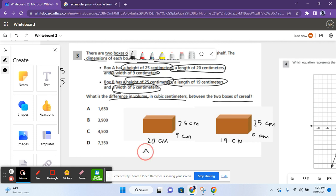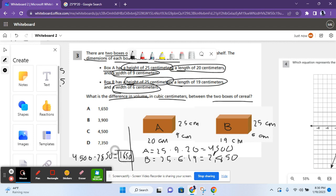So for prism A, you have 25 times 9 times 20. And for B, you have 25 times 6 times 19. So for A, you get 4,500 when you multiply them together. And for B, you get 2,850. So now you have to subtract these values from each other. So 4,500 minus 2,850 equals 1,650, which is answer choice A.